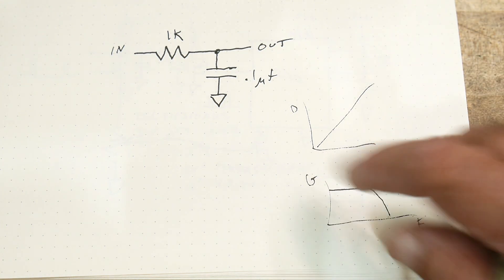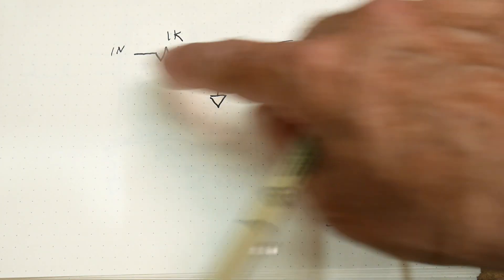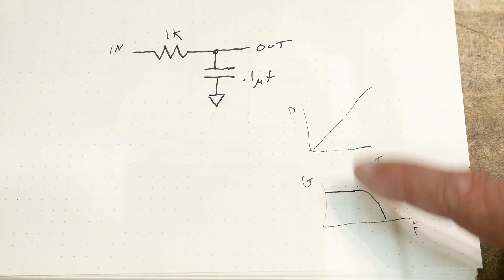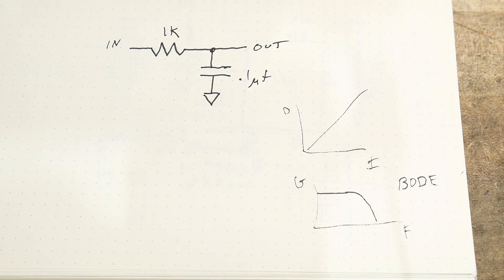So does the phase change from input to output, and how does that phase change? So the Bode plot also includes phase information.